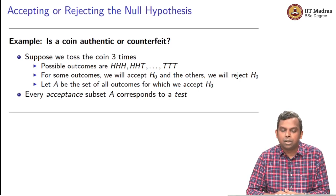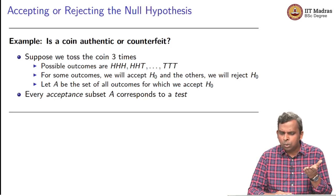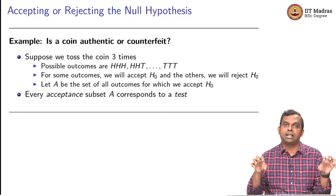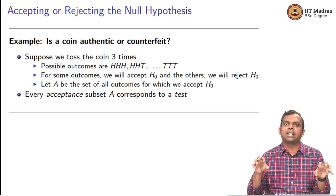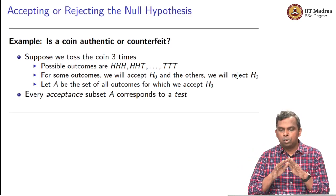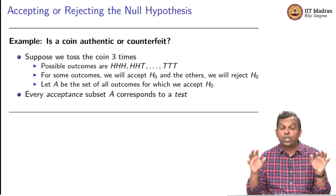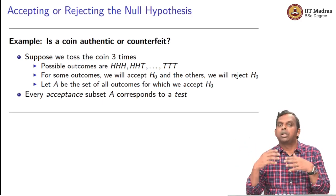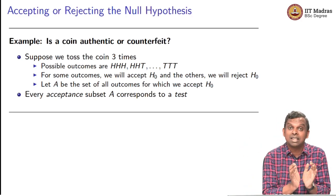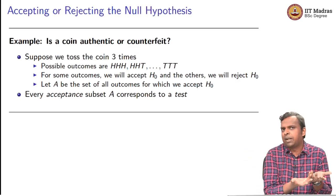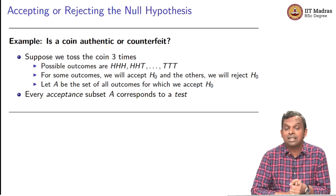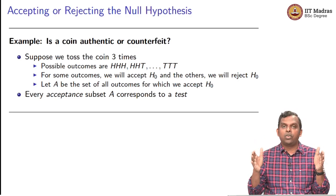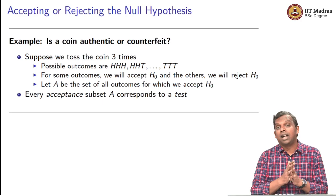Every test corresponds to an acceptance set, and every acceptance set corresponds to a test. When you design a test, you are designing an acceptance set: which outcomes lead to accepting the null, and which to rejecting it. Once you decide the acceptance set, the rejection set is its complement — so the acceptance set is central to the whole framework, and any hypothesis test must describe it properly.